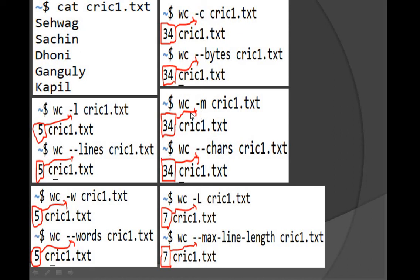This file gives 34 characters and 34 bytes — both are the same. Why? Because we know that one character takes one byte. Since this file has only 34 characters (all single-byte characters), it takes 34 bytes when stored.